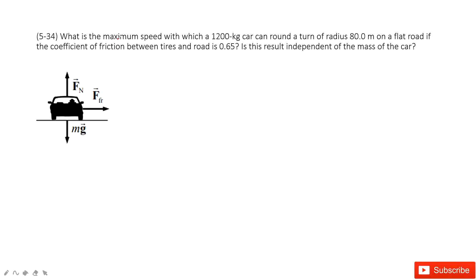We also need to find the speed. For this car, we must have gravity, normal force, and friction. This friction must be static friction because the car couldn't slide. So this is static friction, and this friction is just mu_s times the normal force.